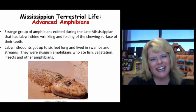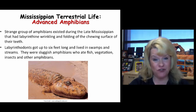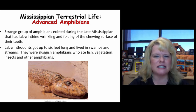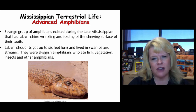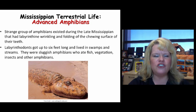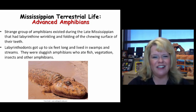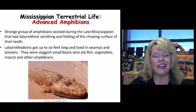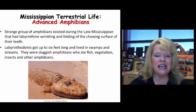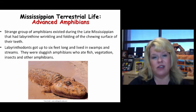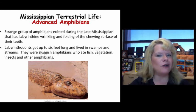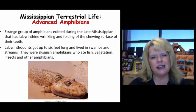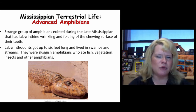Let's talk about some of the animals that moved to land. Back in the Devonian we got our first amphibian, and we're going to see a much more advanced version in the Mississippian. A strange group of amphibians evolved by the late Mississippian with a special type of wrinkled and folded chewing surface on their teeth, which is how they got their name: labyrinthodonts. They got up to about six feet long and lived in swampy conditions and in rivers and streams. They weren't very fast moving on land but would have been excellent predators in water. They ate vegetation, fish, insects, and other amphibians — you would call them omnivores.